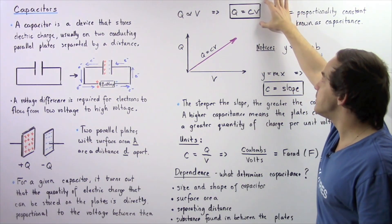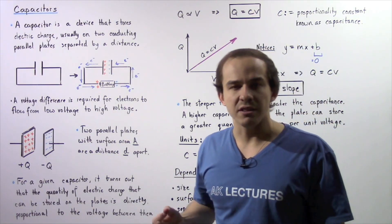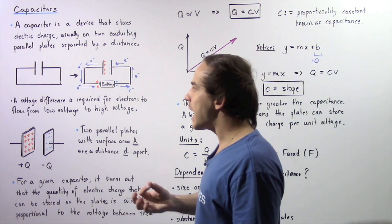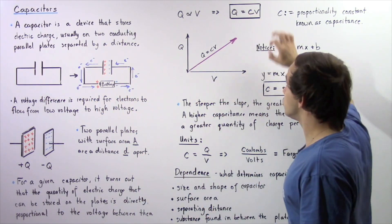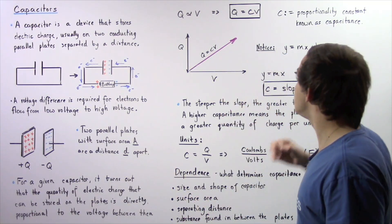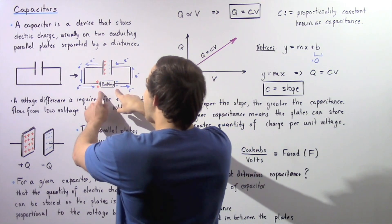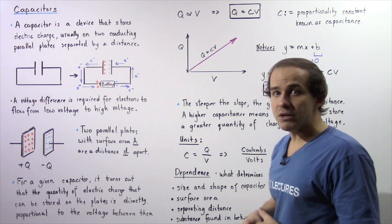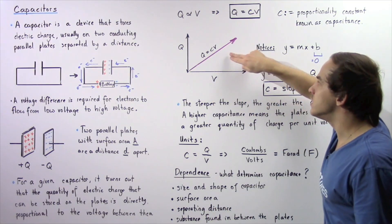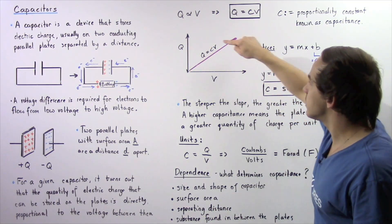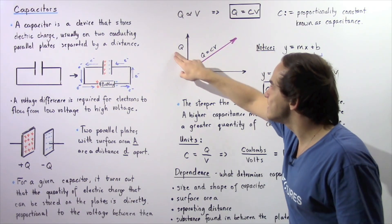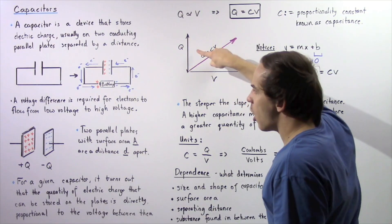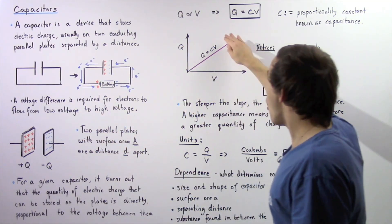This proportional relationship gives us the equation Q = CV, where C is our proportionality constant, also called capacitance. Q is the quantity of charge stored on either plate, C is the capacitance, and V is the voltage difference. Plotting this on the XY plane gives a linear slope, with charge Q on the Y axis and voltage V on the X axis — as voltage increases, the stored charge increases.